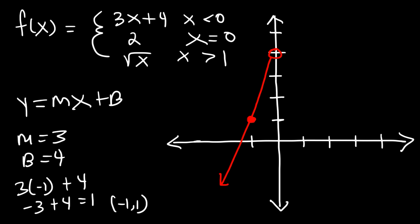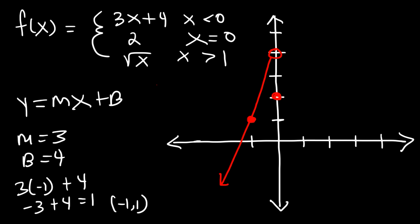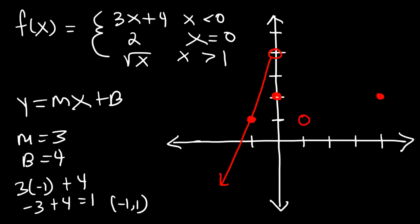When x is 0, y is 2, so we have the point 0 comma 2, and that's going to be a closed circle. Then when x is greater than 1, we have the square root of x. The square root of 1 is 1, so we get the point 1 comma 1, but we use an open circle since it doesn't include 1. The next useful point is x equals 4 because the square root of 4 is 2, giving the point 4 comma 2. The square root function is an increasing function that increases at a decreasing rate — it increases slowly.